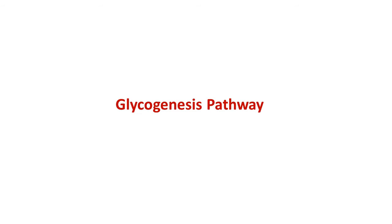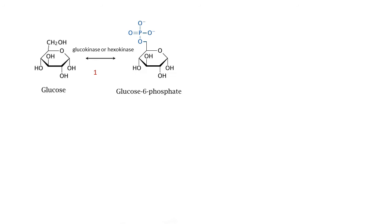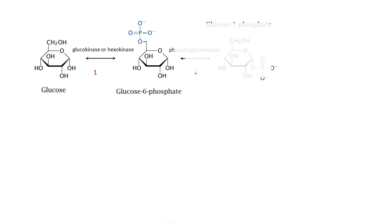Moving on to the steps of the glycogenesis pathway. Glucose is converted into glucose-6-phosphate by the action of glucokinase or hexokinase. Glucose-6-phosphate is then converted into glucose-1-phosphate by the action of phosphoglucomutase, passing through an obligatory intermediate step of glucose-1,6-bisphosphate. Phosphoglucomutase facilitates the interconversion of glucose-1-phosphate and glucose-6-phosphate, and can also act in reverse when a large concentration of glucose-6-phosphate is present.